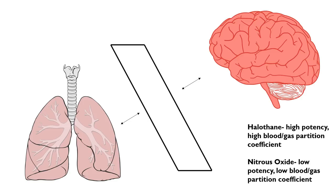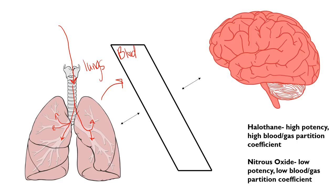Here's a diagram I drew out to explain how inhaled anesthetics work. An inhaled anesthetic is sent into the lungs to be breathed in — say through a ventilator — and it travels down into the different parts of the lung, reaching the alveoli. From the alveoli it can travel into a blood vessel, so first it enters the lungs, then it enters the bloodstream, and then from the bloodstream it's able to go into tissues. The tissue we want it to act on is the brain.